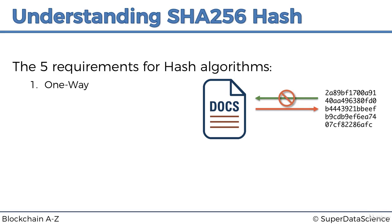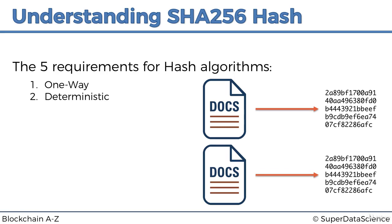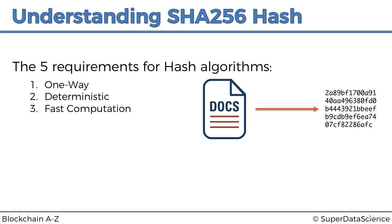Just like a human fingerprint — if you have someone's fingerprint you can't reconstruct what they look like. But given a person, you can always get their fingerprint. So it only works one way. Requirement number two is that it must be deterministic: applying the hash algorithm to the exact same document later will always produce the exact same result, as we saw in the demonstration.